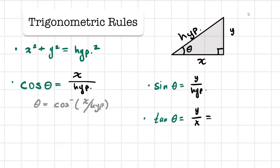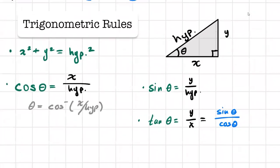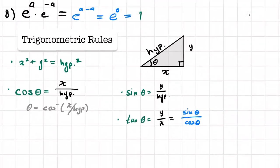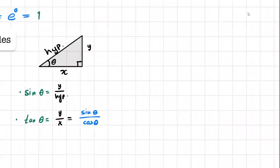You can also find theta by doing sine of theta over cosine of theta. These are things that hopefully you guys remember so that you can take advantage of them and it doesn't become too hard. From this we also have a few more identities.